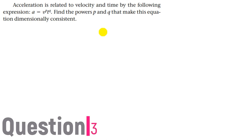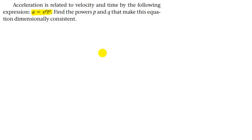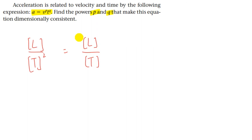This next question states that acceleration is related to velocity and time by a given equation. We have to find the powers p and q such that the equation is dimensionally consistent. The equation is dimensionally consistent when the dimensions on the left side equal those on the right. The left side has acceleration with dimension L/T². The right side has velocity (L/T) to the power p times time T to the power q. Comparing the power of L: on the left it is 1, so p equals 1.